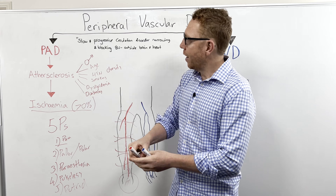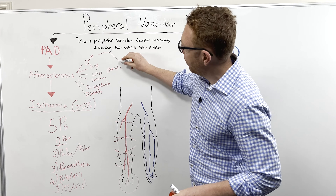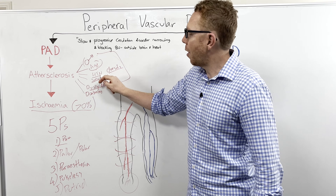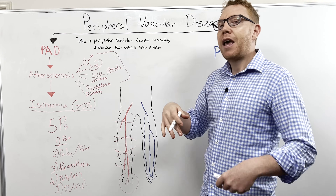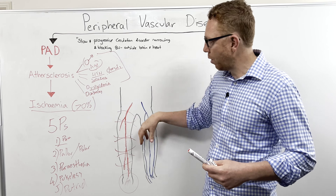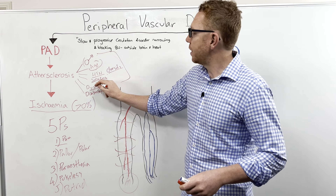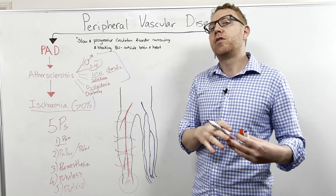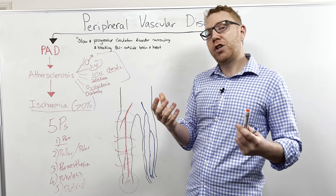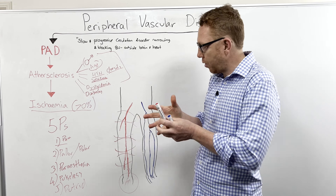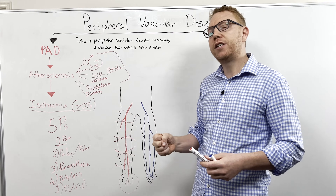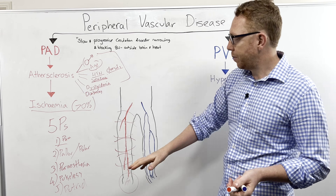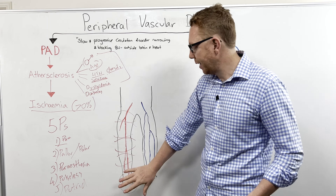For treatment, you would address the cause — atherosclerosis — with lifestyle modifications: help with obesity and weight loss, medication for hypertension, and exercise, which promotes blood flow and collateral vascularization. Reducing smoking is important. Medications include statins for dyslipidemia and antiplatelet medications to prevent clot formation. Surgical options include balloons and stents to open occluded vessels, bypass surgery, or other vascular interventions. If there is gangrene, amputation may be necessary.